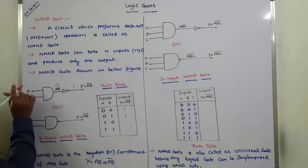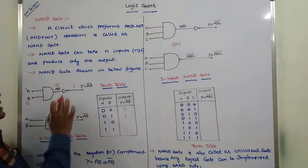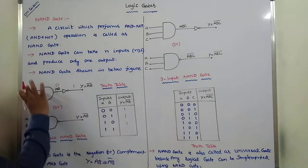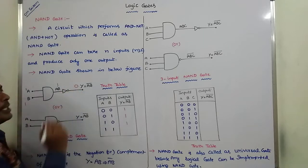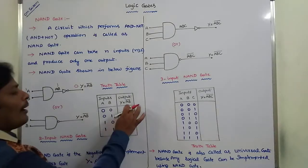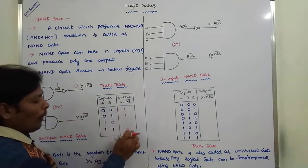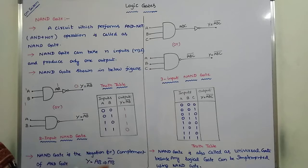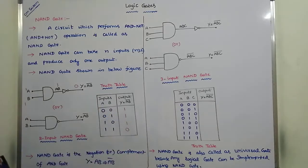For inputs 1,1: A=1 and B=1 are sent to the AND gate, output is 1. 1 is complemented, giving 0. So Y = AB̄ = 0. This is the opposite of the AND gate — in the AND gate we get 0, 0, 0, 1, but here we get 1, 1, 1, 0. Hence the NAND gate is the negation or complement of the AND gate. With N=2 inputs, there are 2^N = 2^2 = 4 input combinations: 00, 01, 10, 11.